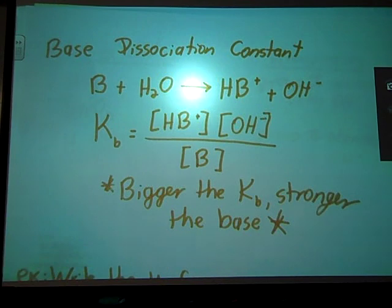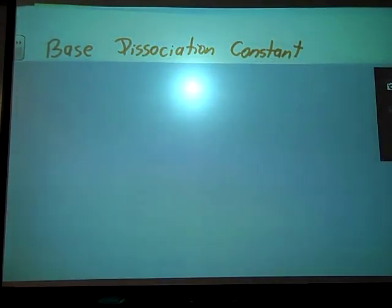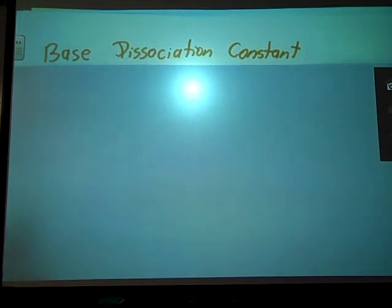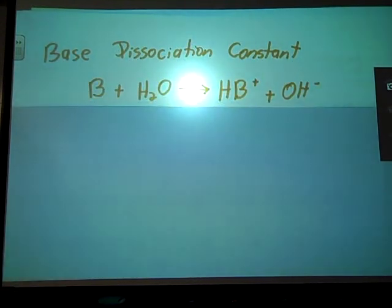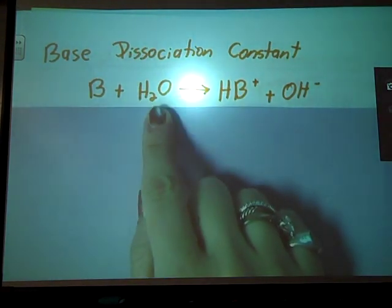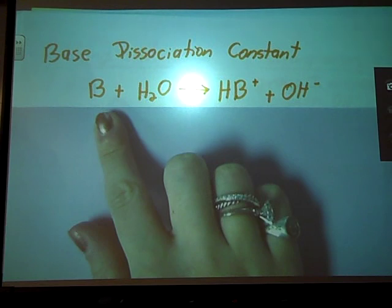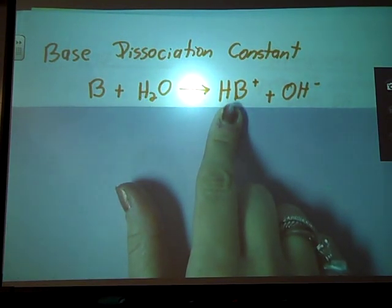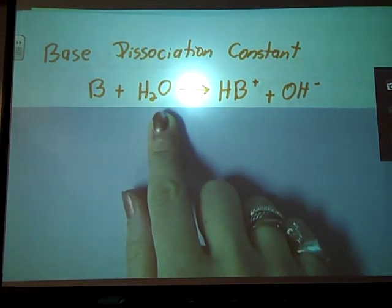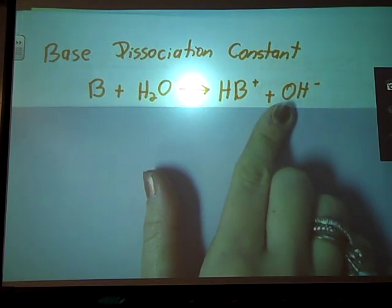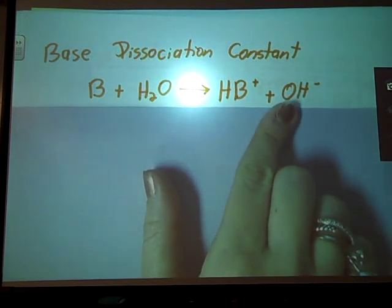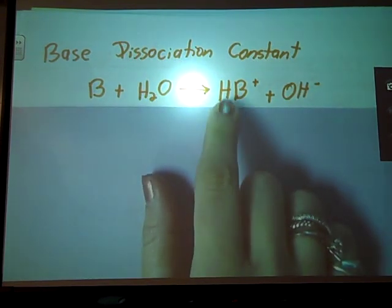Now let's talk about the bases. So the base dissociating constant is going to be Kb, as one would expect. So when I put my base in water, now my water is acting as an acid. Here's my base. So if this is my acid, my conjugate base has lost an H+. My conjugate acid has picked one up.